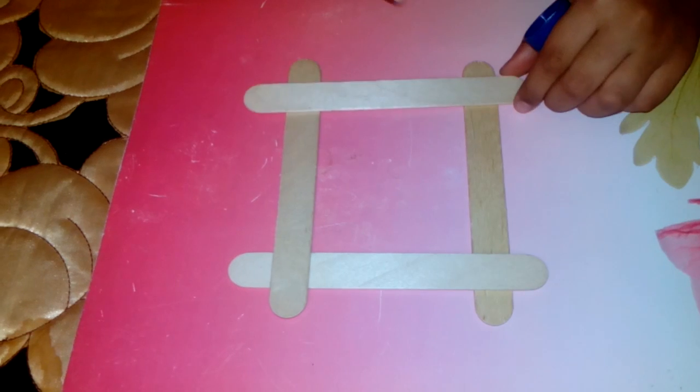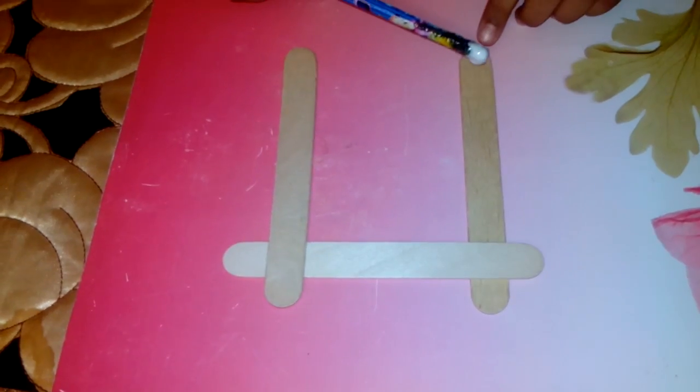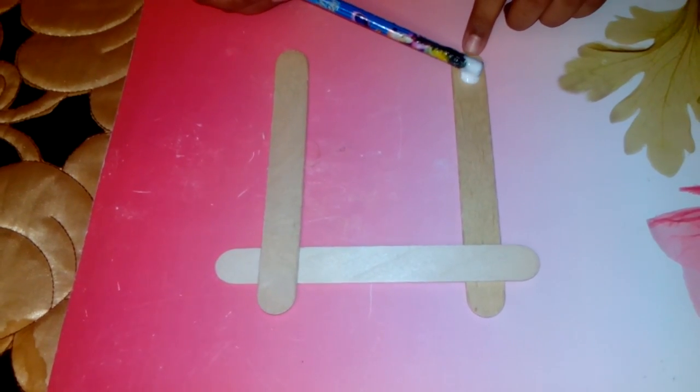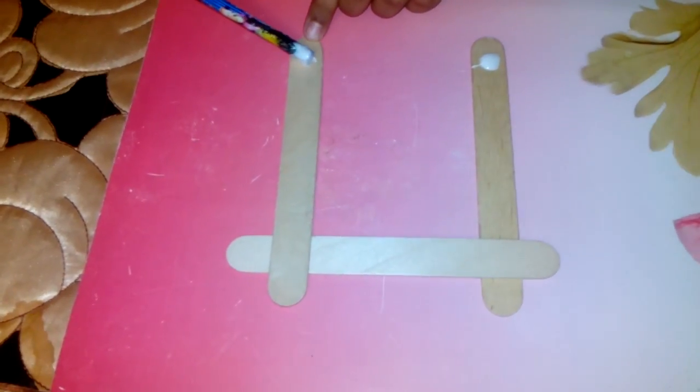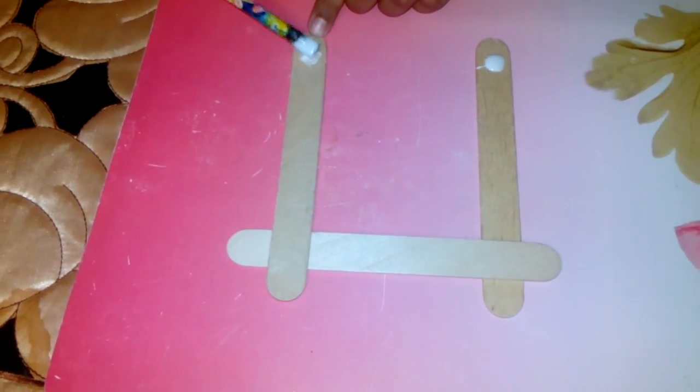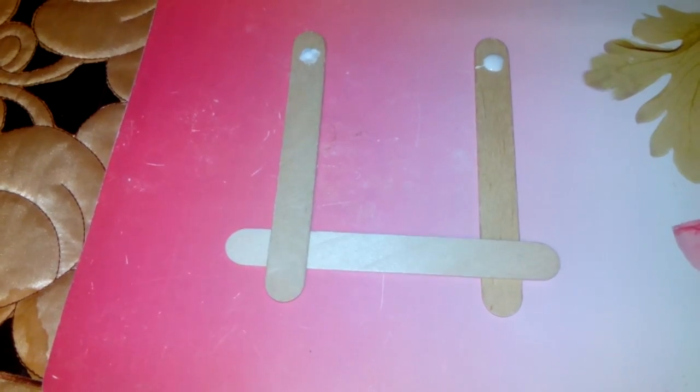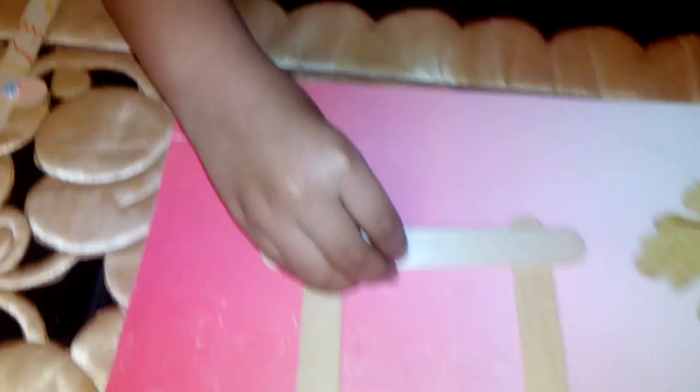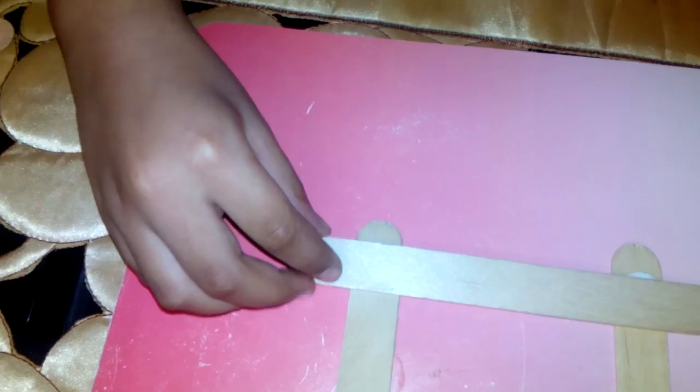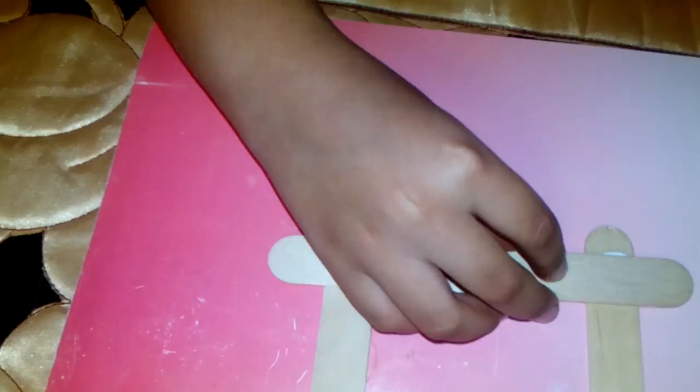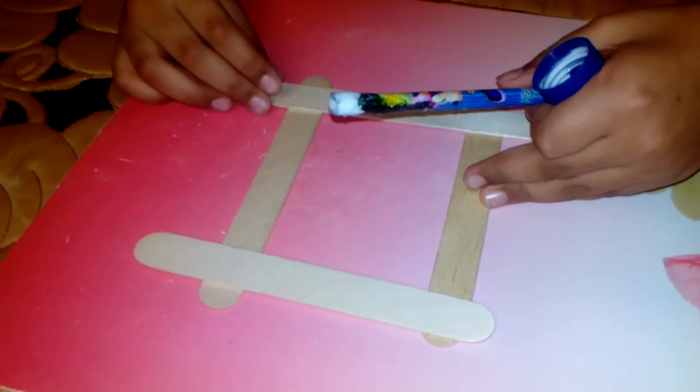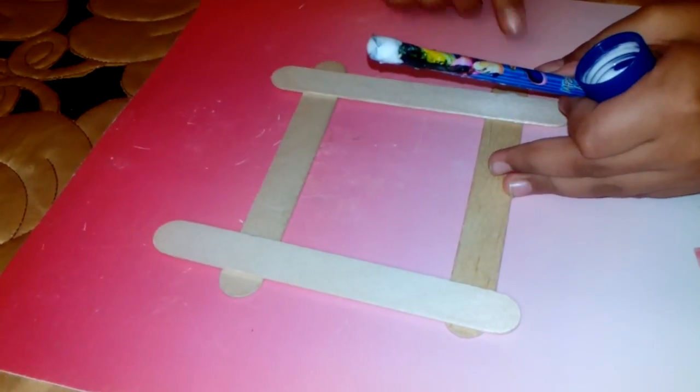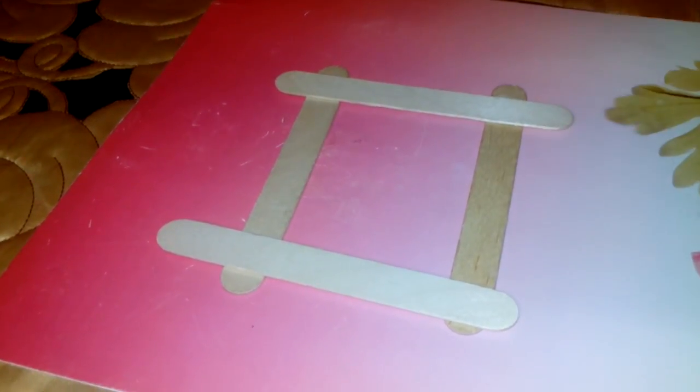So now I will take off this ice cream stick from here. I will put two dots of glue on each of the ice cream sticks and place the ice cream stick here. Like this, straight. Take out the excess of the ice cream sticks.